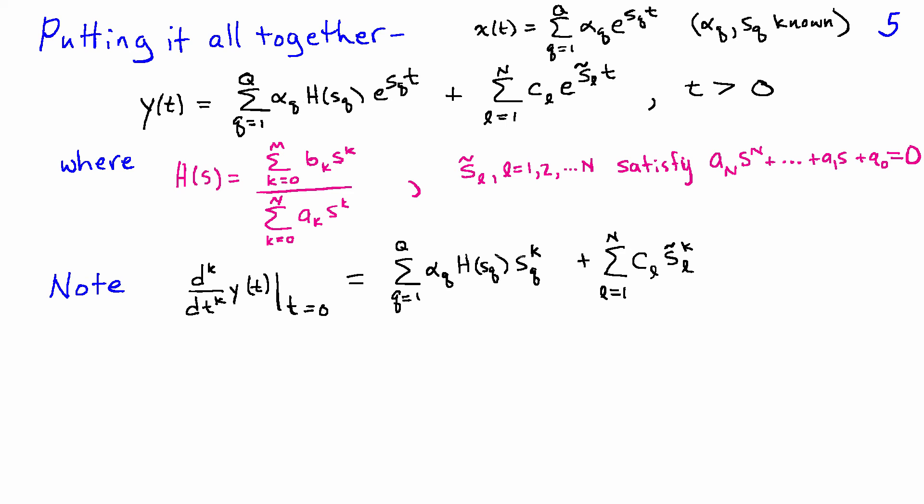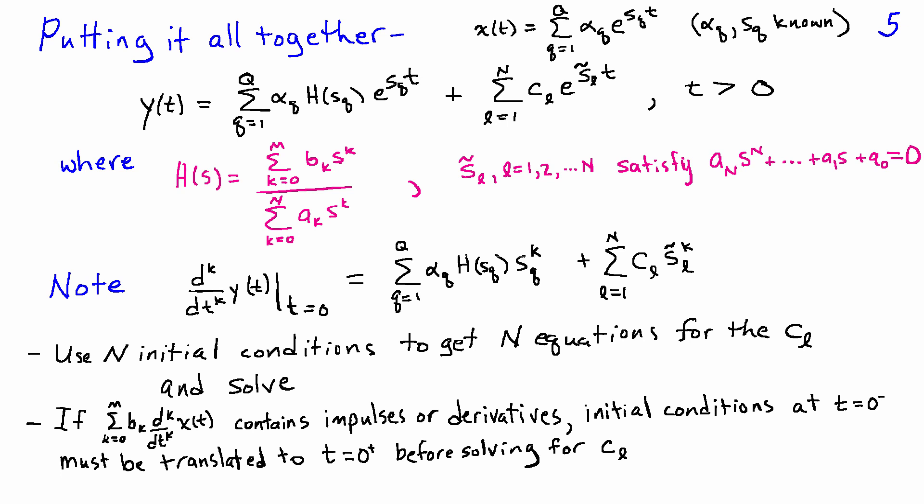This output is easy to differentiate because the only terms that depend on t are the exponentials. Evaluating the k-th derivative at t=0 gives a sum over q of alpha_q·H(s_q)·s_q^k — just some constant — equal to the sum from l=1 to N of c_l·s_l^k. With the c_l as the only unknowns, we use the N initial conditions to get a system of N linear equations in the N unknowns c_l, solve for them, and the solution is complete. This will be illustrated with an example in the succeeding video.